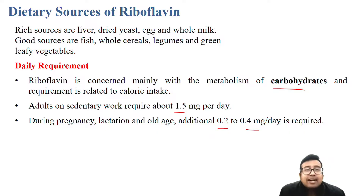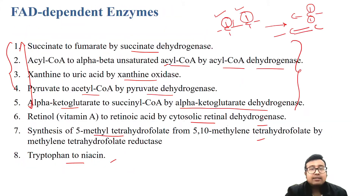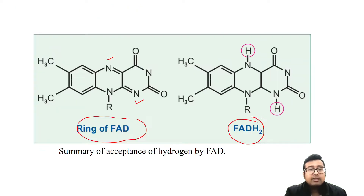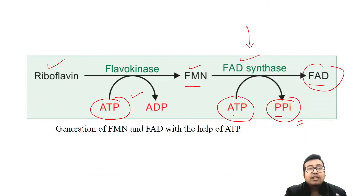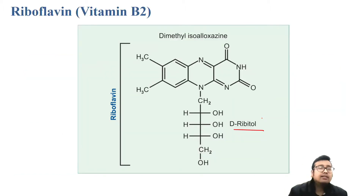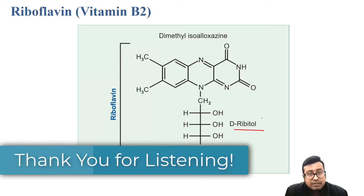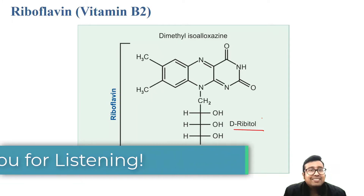That is it for today's video. Not much to remember, but it is very important — especially the enzymes of carbohydrate metabolism and the respiratory electron transport chain where FMN is used as a cofactor, and the reaction by which riboflavin is converted to FMN and FAD, and the semiquinone form. We will continue with the next water-soluble vitamin soon. Bye and take care.